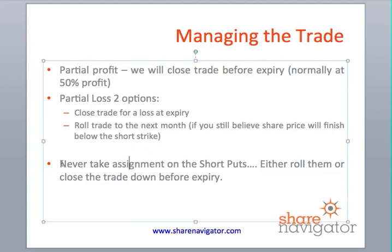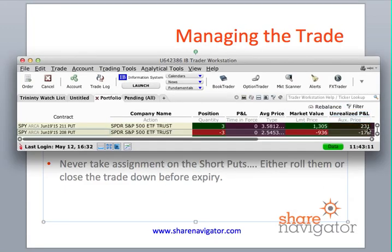Looking at our trade right now, you can see we're in a profit position — we've made about $59 on that trade. We could close both positions down and book that profit now, but we believe volatility will increase a bit more. We're going to wait for maybe $100–$150 profit and then close the trade down, monitoring market conditions every day.